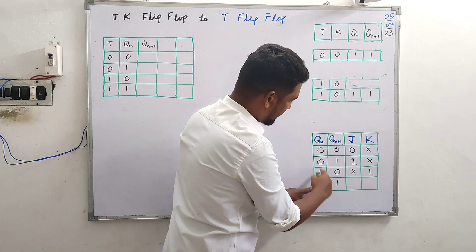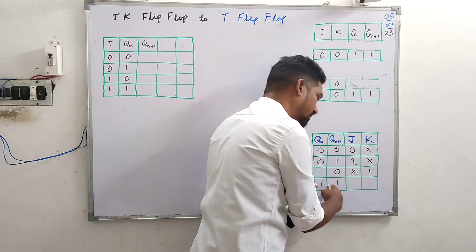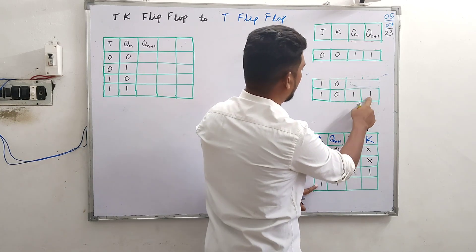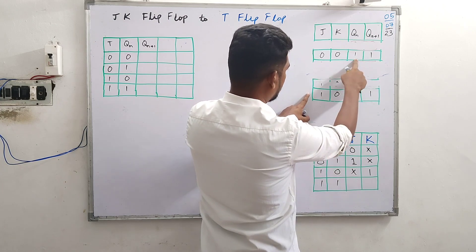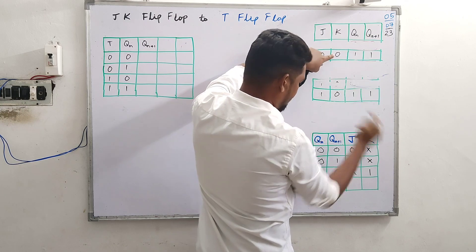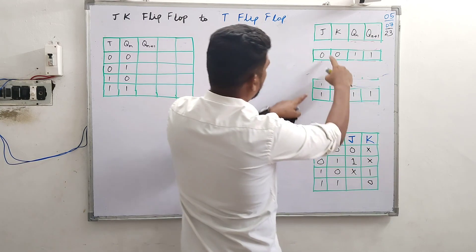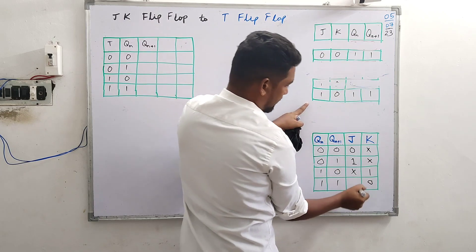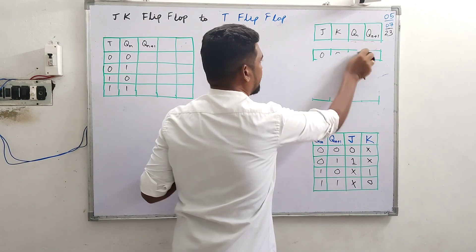Finally, the one-one combination — toggle condition — present state is one, and after the clock pulse next state should also continue as one. For this, the JK inputs needed are J=1 and K=0. And K here is zero, so plug in zero straightaway. J in this case could be zero or one — that's a don't care. So we are done with the excitation table.